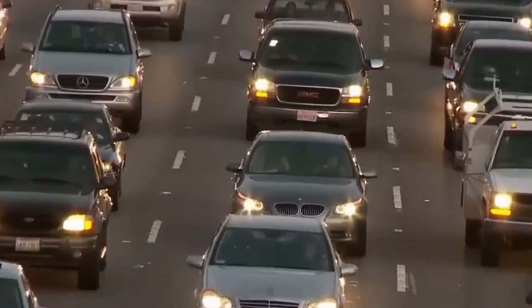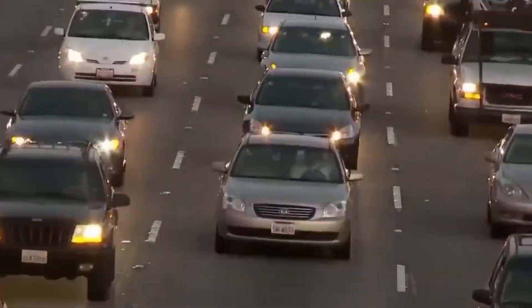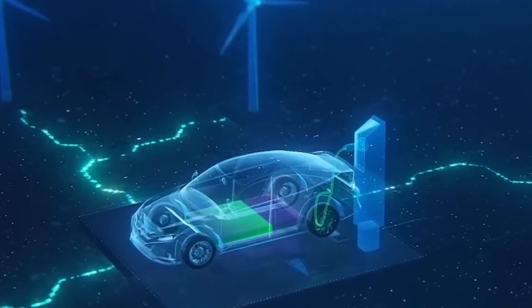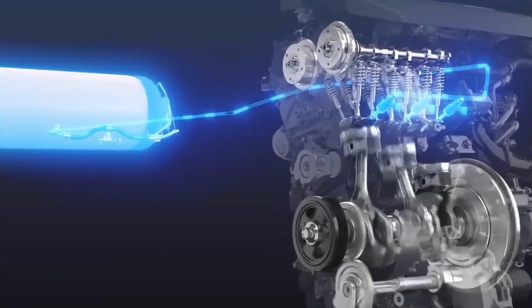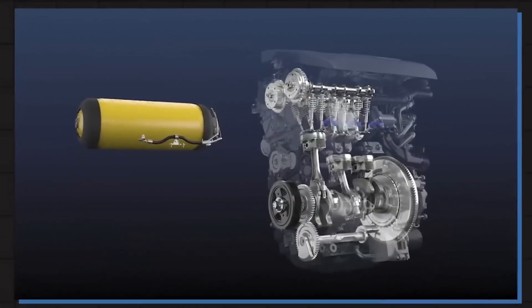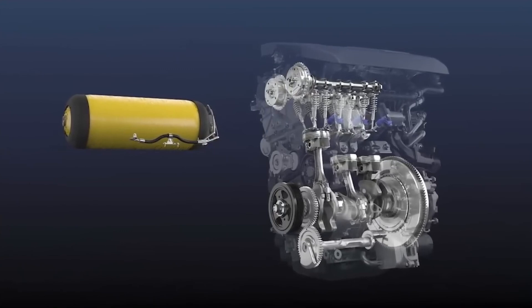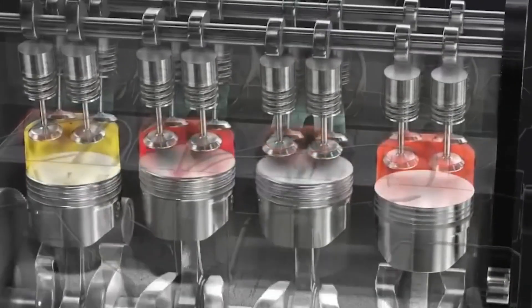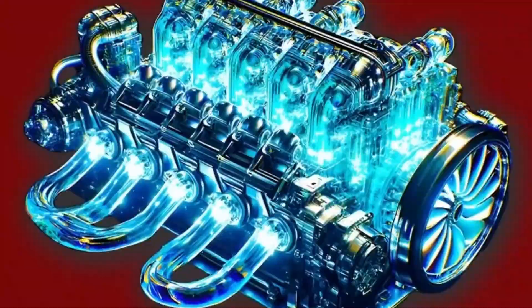Compared to traditional electric vehicles, this hydrogen engine provides a longer range and faster refueling times, reducing reliance on materials like lithium and nickel used in EV batteries. Currently, the Corolla Cross H2 is undergoing real-world testing in Japan, receiving positive feedback.